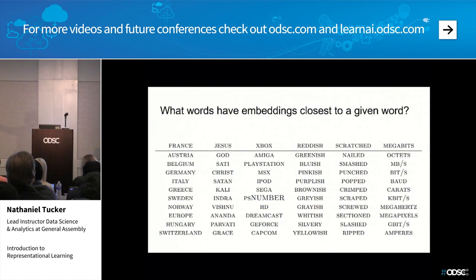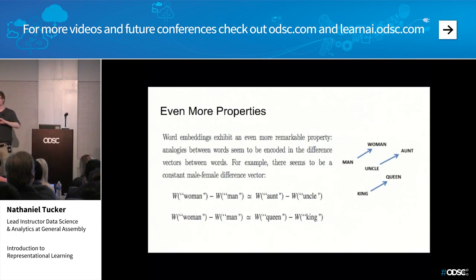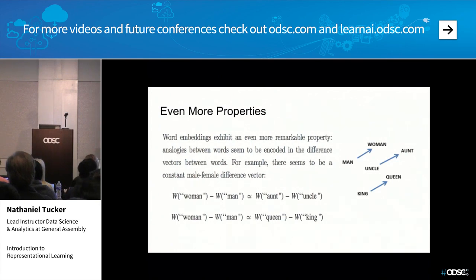For example, if I look at the word embedding for 'France' and find the closest words, I get Austria, Belgium, Germany - that makes sense. If I look at 'Xbox' I get Amiga, PlayStation. Another cool property: you can subtract word vectors and get out something along the lines of gender or leadership. For example, subtracting 'man' from 'woman' is roughly equivalent to the difference between 'aunt' and 'uncle' - you're just capturing the femininity versus masculinity difference. These relationships are real.